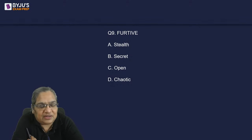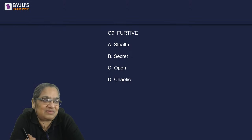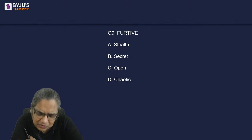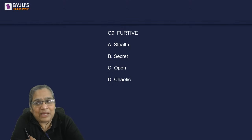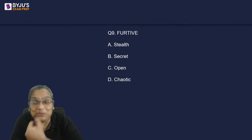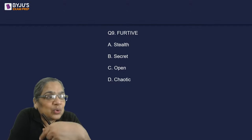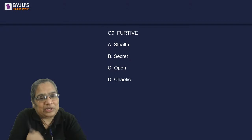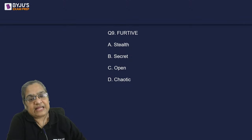You glance furtively at the other person's paper. When you are in an exam waiting for the test to start, you don't want the other person to know you are looking at their screen — so you give a furtive glance. The meaning of furtive is stealth and secrecy. Other words with the same meaning: clandestine, surreptitious, covert — all mean secret.